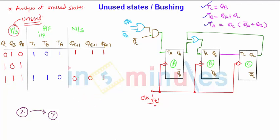...is going to 001, that is state number 1. So state 7 is going to state number 1. But what I see here is that state number 1 is a valid state, so this is a valid state.